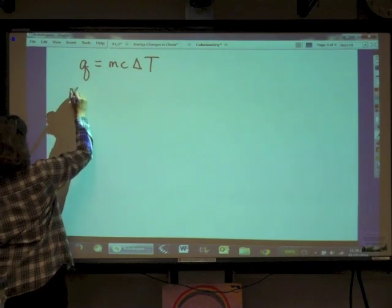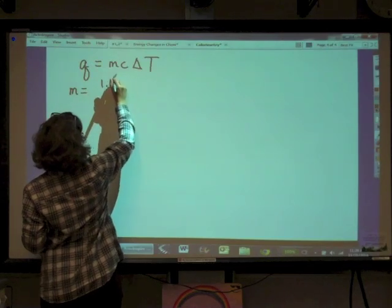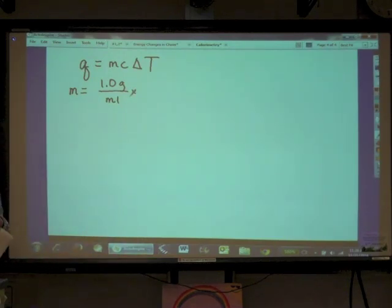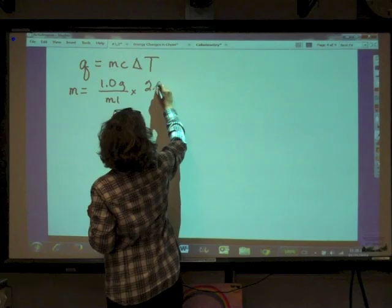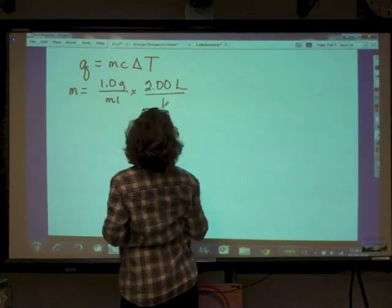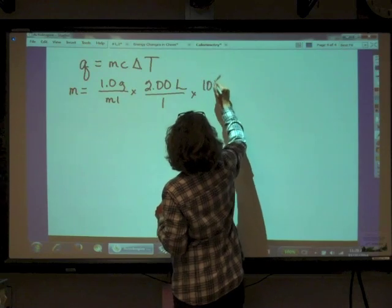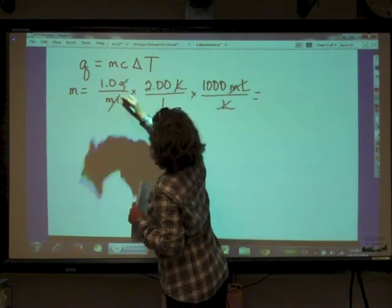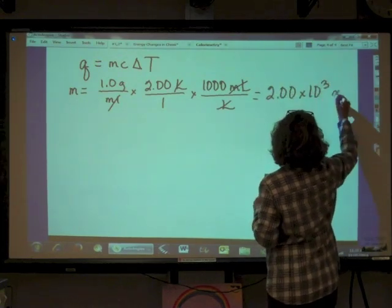First, we need to figure out the mass. They gave us the density of the solution: 1.0 grams per milliliter. How much solution do we have? We mixed 1 liter and 1 liter, so we have 2 liters total. We need to convert: 2.00 liters times 1,000 milliliters per liter. Liters cancel, milliliters cancel with the density, and we get 2.00 times 10 to the third grams. That's our mass.